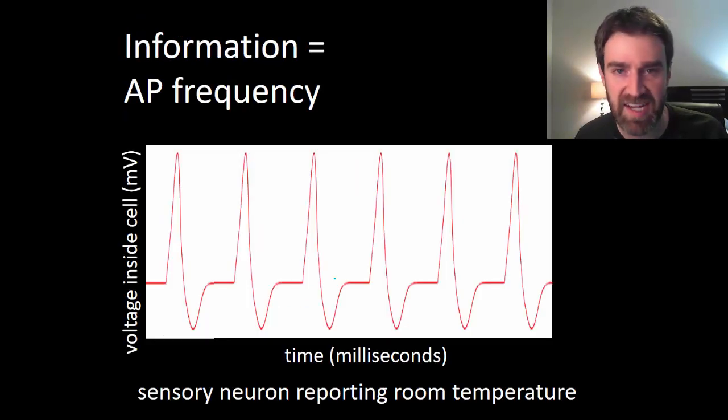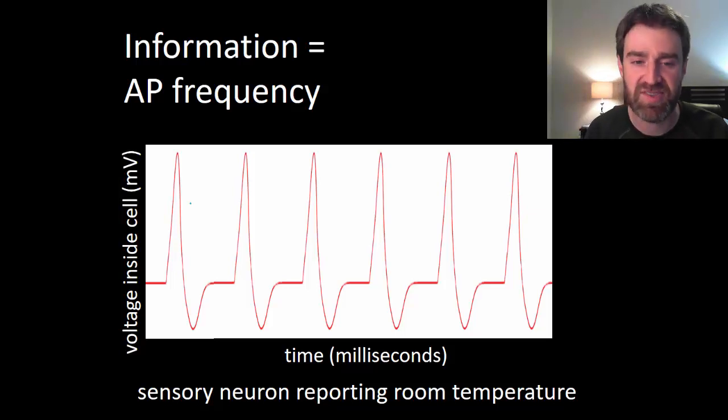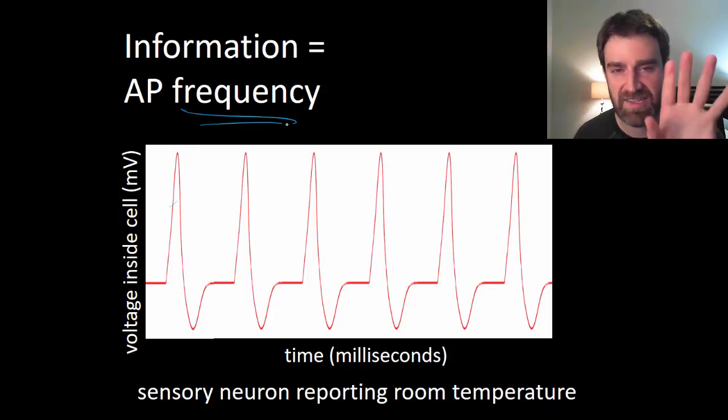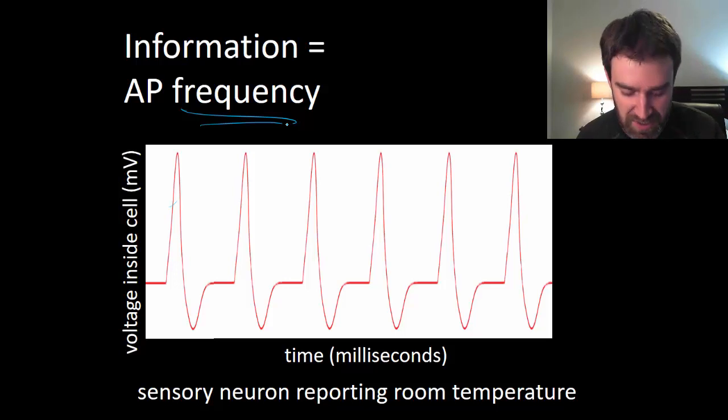Okay, so the very last concept that I just want to cover here is that all neurons fire action potentials the same way, but they'll encode whatever they're trying to communicate in the frequency, or how often, they send action potentials. So just as a quick example, maybe I've got a temperature-sensing neuron in my fingertips, and it will give information about that temperature with how often it sends action potentials down its axon.